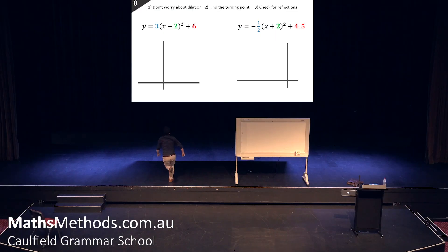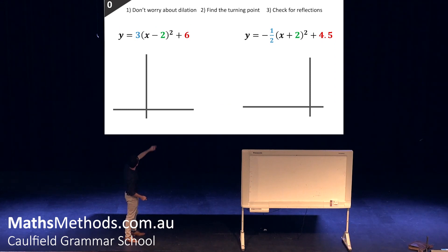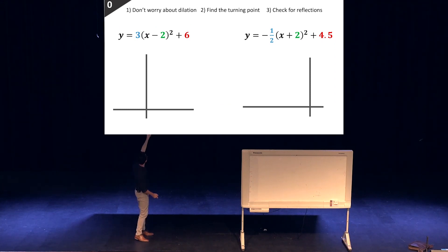So the first thing is, you don't worry too much about dilation. So that's the blue thing right there, the three. And then you just find a turning point, very simple, would be (2, 6). And then you check for reflections, no reflections in this, so we draw in our parabola.